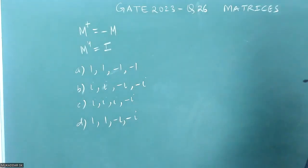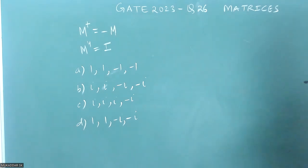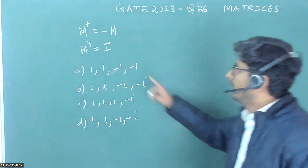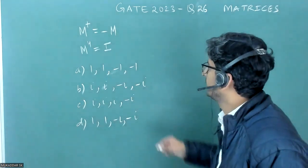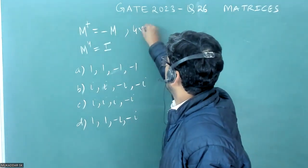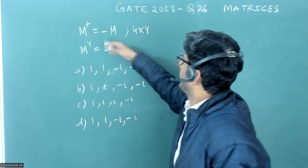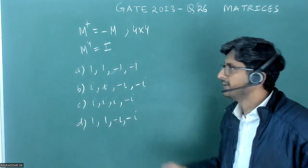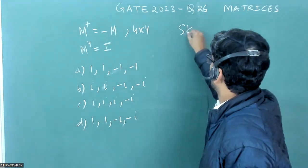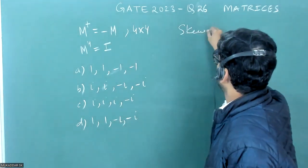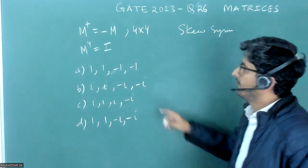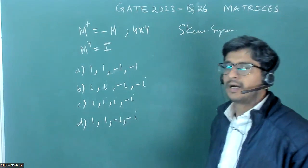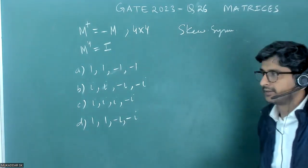This is GATE 2023 question number 26 on matrices. A 4×4 matrix is given where M† equals minus M, meaning it is a skew symmetric matrix, and M⁴ is also the identity matrix.